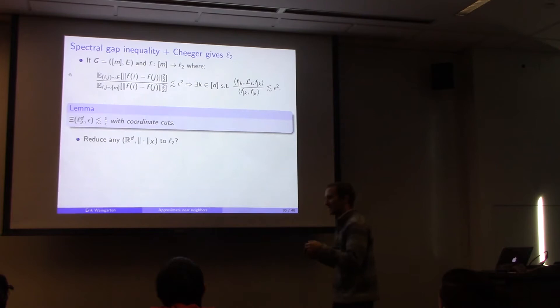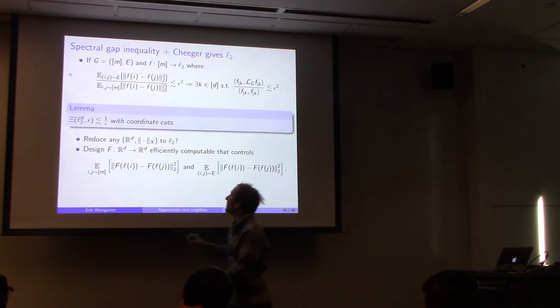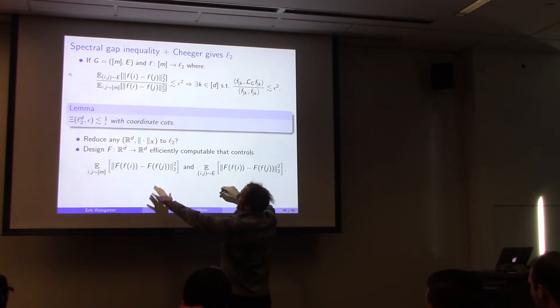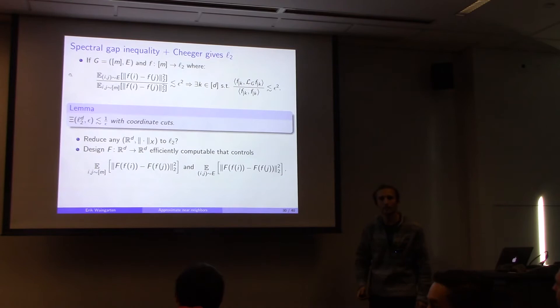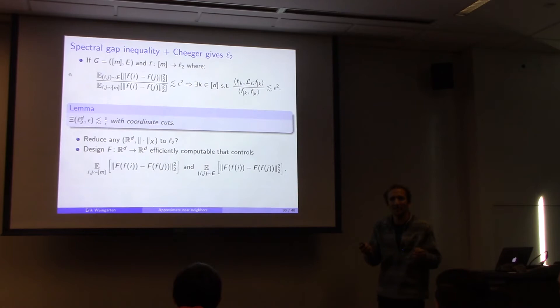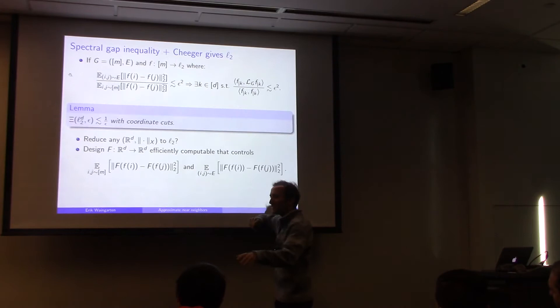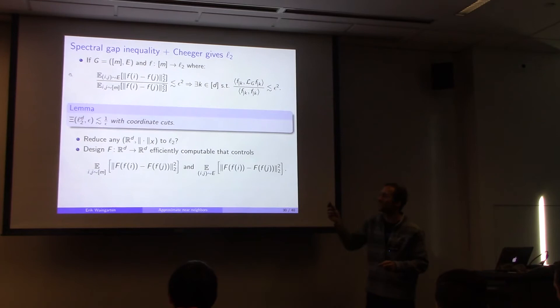The question is: can we reduce any norm to L2 for this purpose? I need a function F mapping my norm space into L2 such that I can control the ratio of L2 squared distances between edge-connected points versus random points. John's theorem would work but loses sqrt(d) everywhere; it preserves every single distance, whereas I only need an average guarantee. That's the key insight for improving on John: average-case embeddings can do much better than worst-case embeddings.